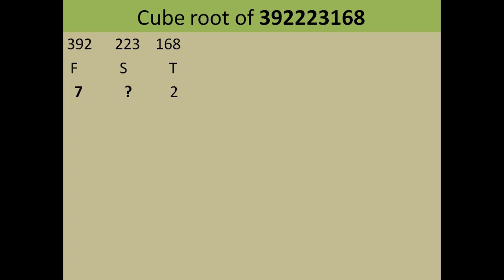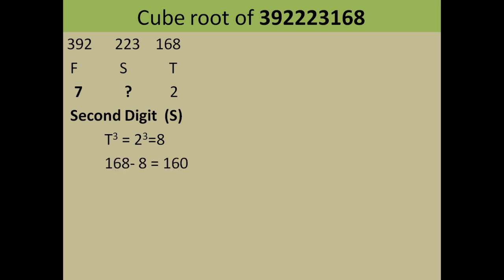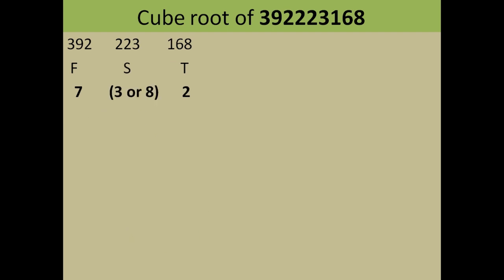Now for the second digit: cube the third digit (2³ = 8), subtract from the last group: 168 − 8 = 160. Ignore the first and last digits, take the middle digit: 6. Equate with 3T²S: 3 × 2² × S = 12S. Set 12S equal to 6 — we need 12 × S to end in 6. Both 3 and 8 work: 12 × 3 = 36, 12 × 8 = 96. So the second digit is either 3 or 8, giving answers of 732 or 782.